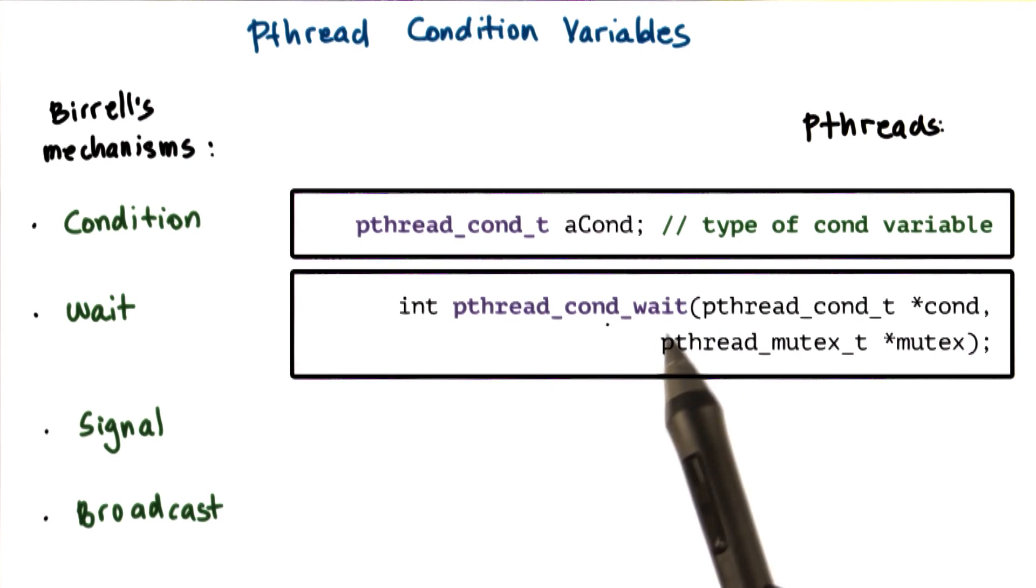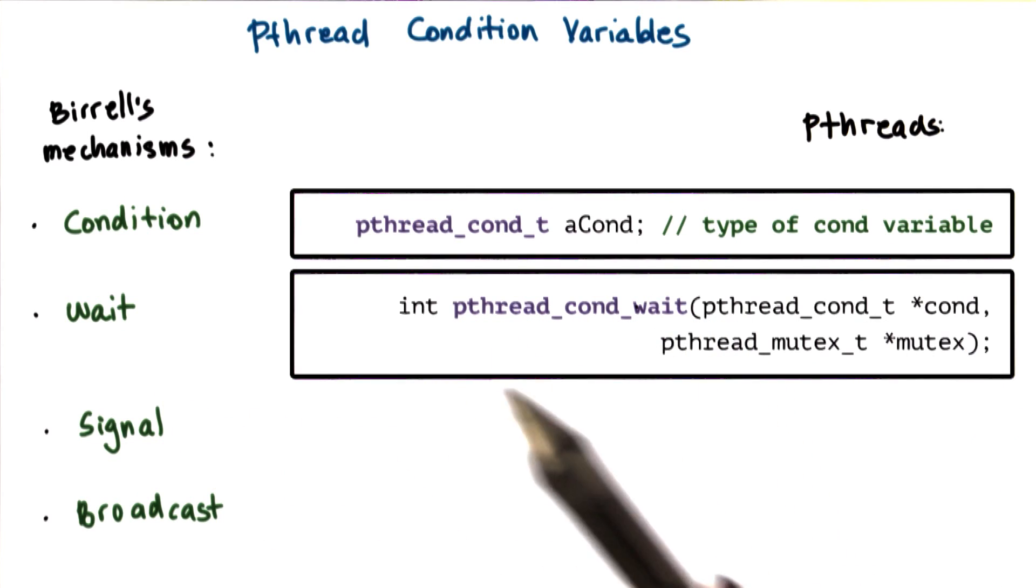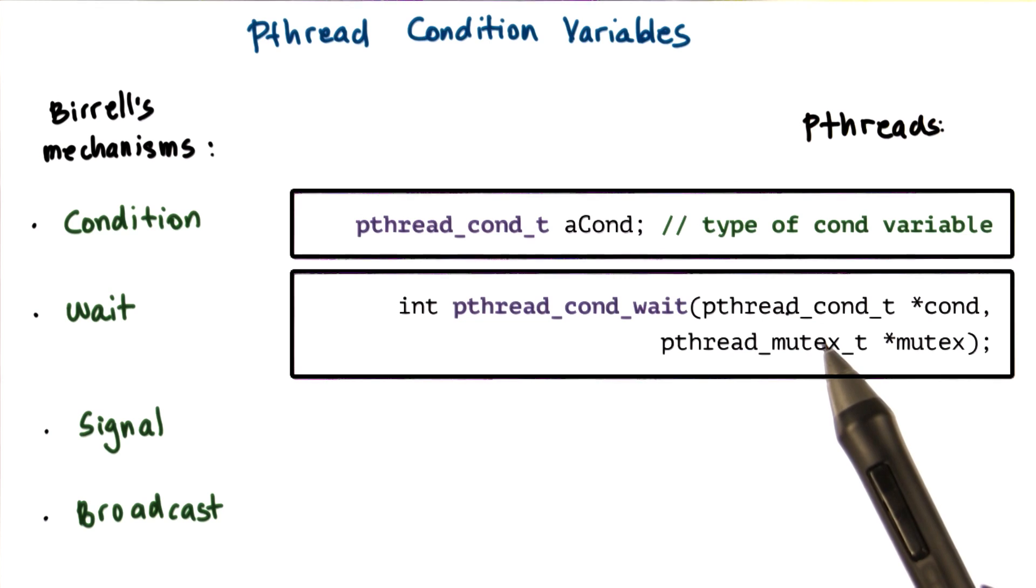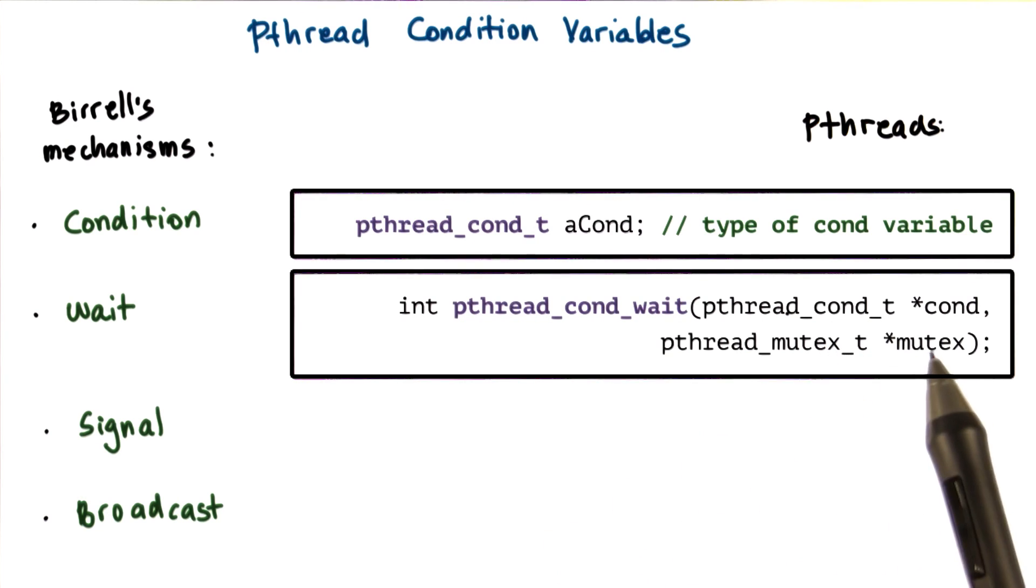The semantics of this operation is also identical to Beryl's wait. A thread that's entering the wait operation, a thread that must wait, will automatically release the mutex and place itself on the wait queue that's associated with the condition variable.